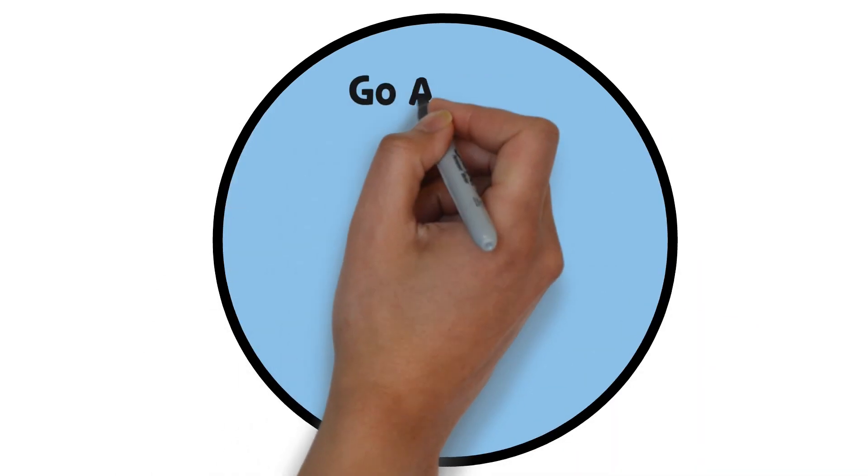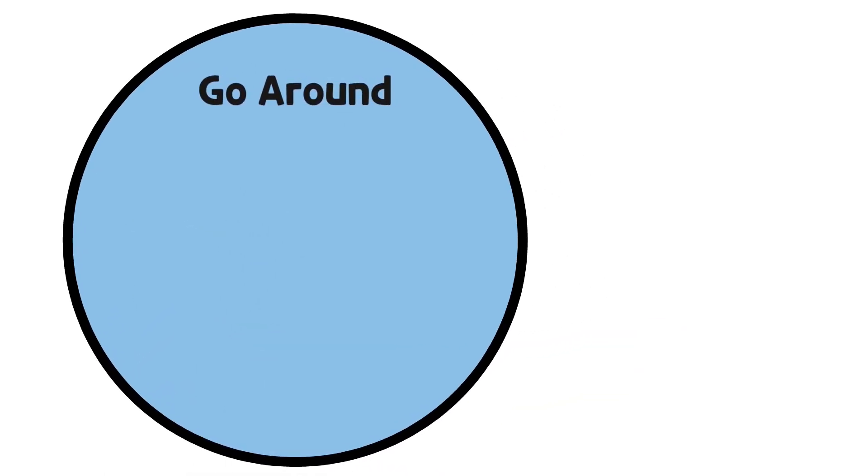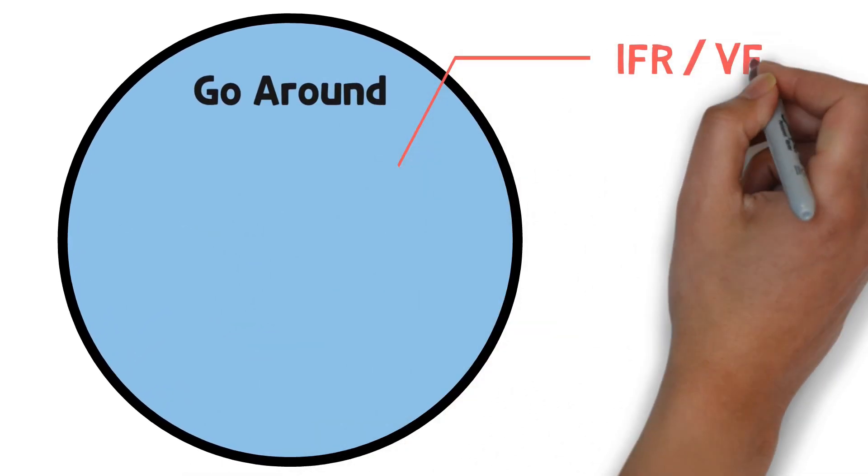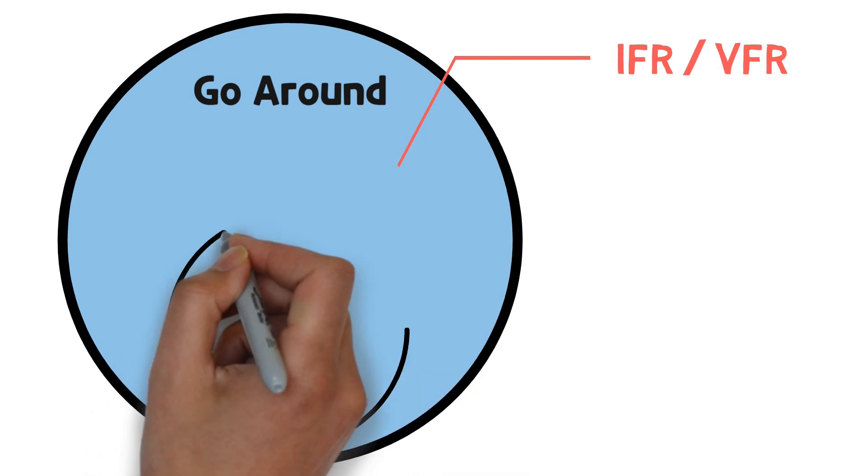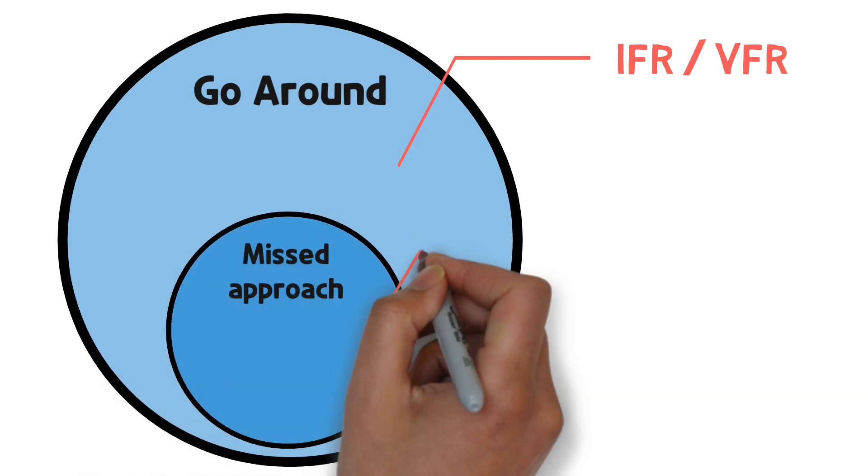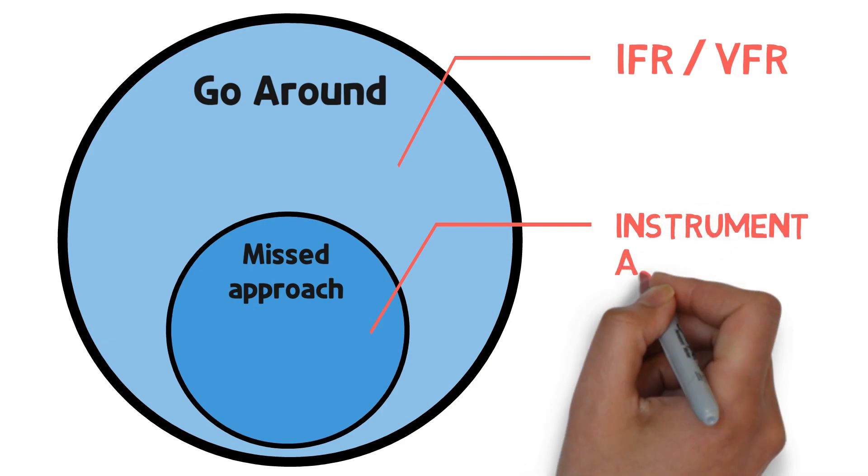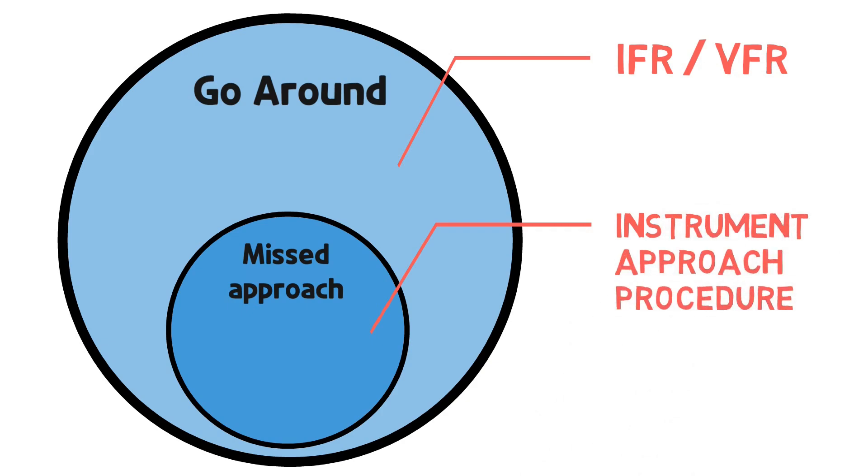In other words, the term go-around is used to convey non-landing to all aircraft regardless of flight rule. And missed approach is a term used when an aircraft performing an instrument approach must fly a missed approach segment.